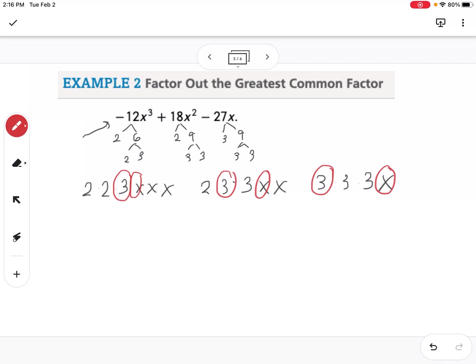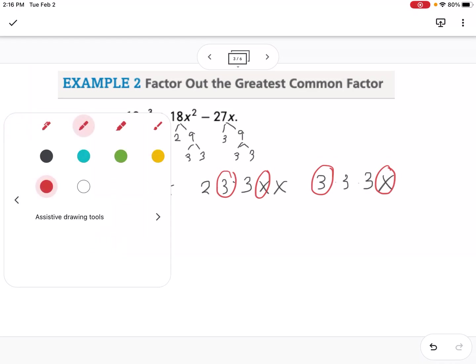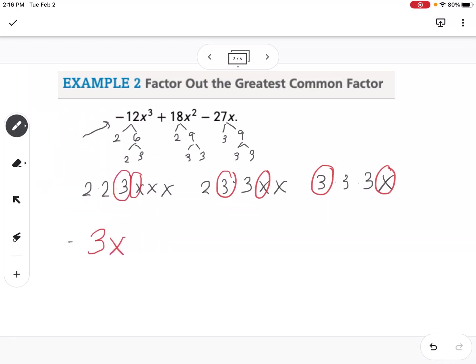So that means my GCF is going to be 3x. But because that first term's negative, I'm going to pull out a negative with it. So it's going to be negative 3x.